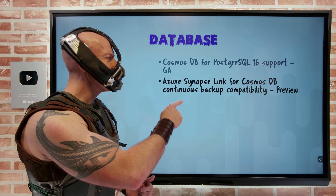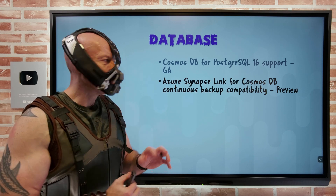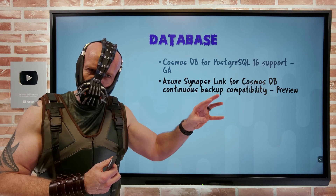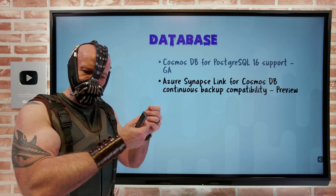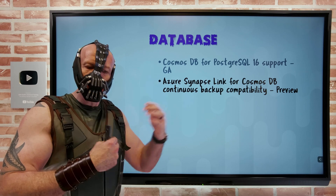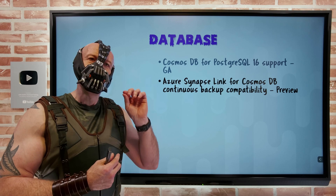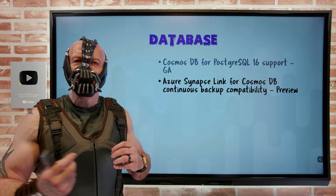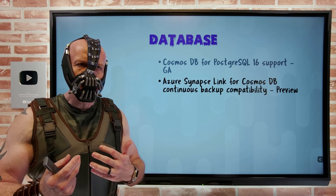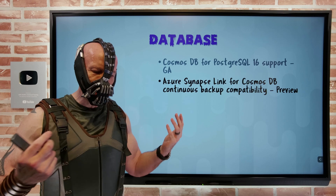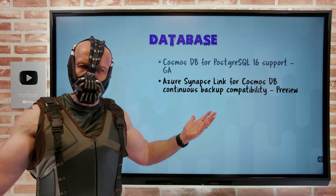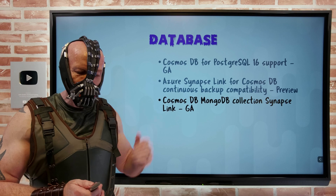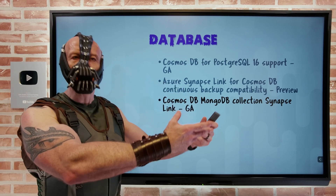Even if I'm using the continuous backup capability of Cosmos DB, I can now leverage the Azure Synapse Link. The Azure Synapse Link takes my regular transactional store, syncs it into the analytical store, which is column-store based — so it's better for analytical queries — and brings that into Azure Synapse for near real-time business intelligence and analytics, essentially ETL without any manual ETL jobs. So now it has continuous backup support. Additionally, the Synapse Link now works with my Cosmos DB Mongo database collections, adding support beyond what it already had.